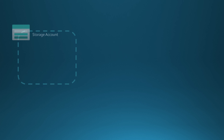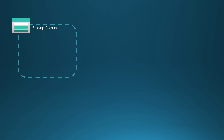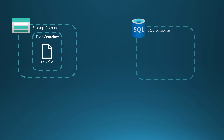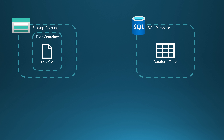Let's start with today's setup. We have a storage account. In that storage account, we have a Blob container, and in that Blob container we have a CSV file. We also have an SQL database, and in that database we have a database table. We would like to use Data Factory to copy that CSV file and its contents to that database table.